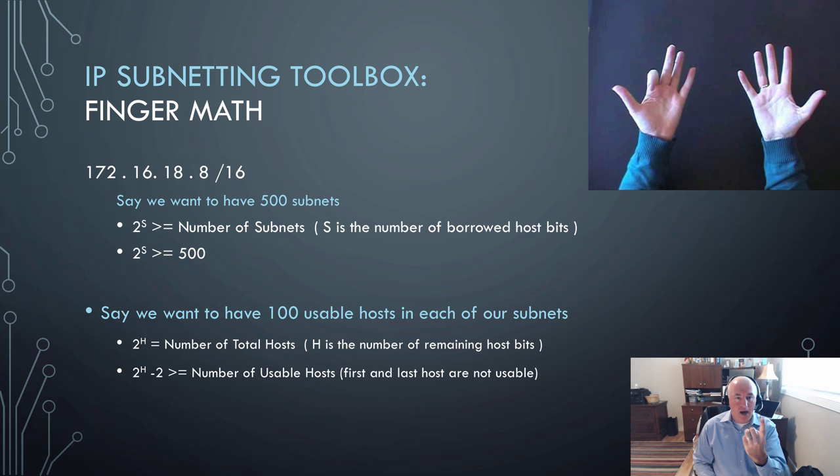One finger is two though because a finger is a bit. So if I have one bit, I could have a zero subnet and a one subnet. So I can have out of one bit position, I can have two values, one and zero. So we start counting at two actually with our fingers. So always with finger math count two, four, eight, 16.